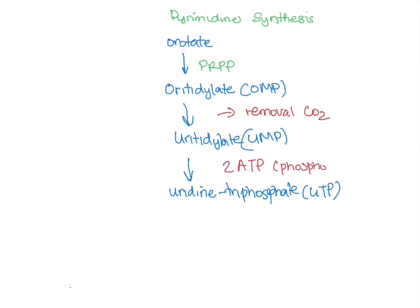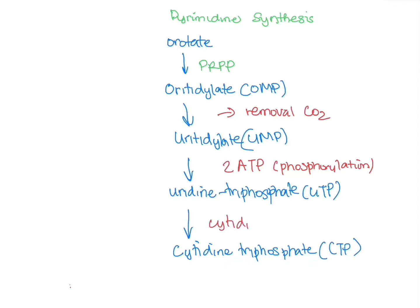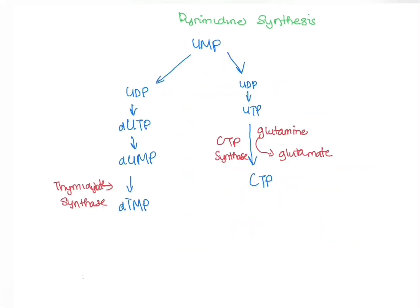In the presence of two ATP molecules there is phosphorylation to form UTP — one ATP converts UMP to UDP, and another ATP molecule converts it to UTP. Once UTP is formed, cytidine synthase comes along and makes CMP. In pyrimidine synthesis, UMP can either go on to form DTMP or CTP.